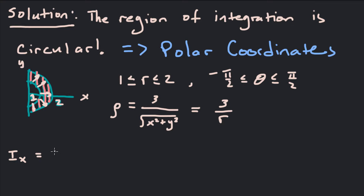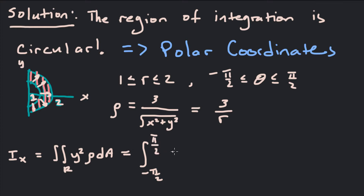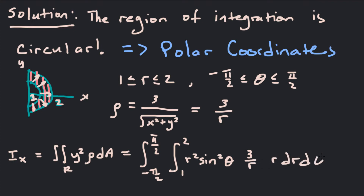Ix equals the integral over the region R of y² · ρ dA. Converting everything to polar coordinates: integral from −π/2 to π/2, integral from 1 to 2. y is r sin θ, so y² becomes r² sin²θ. Rho is 3/r. And dA is r dr dθ. We're going to have some cancellations — the r in 3/r cancels with one r from dA.